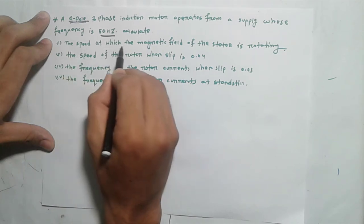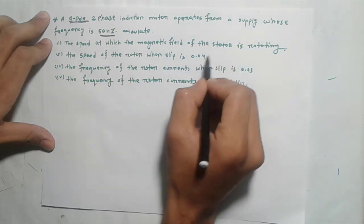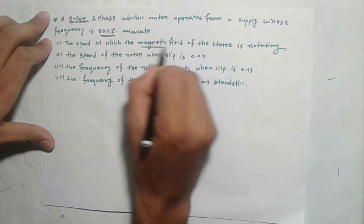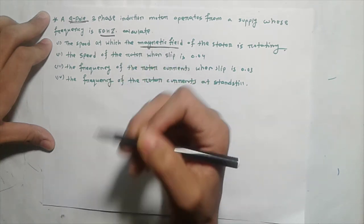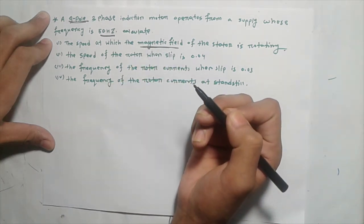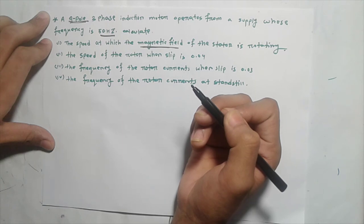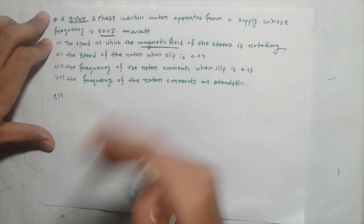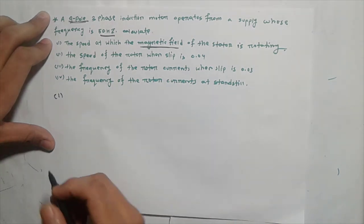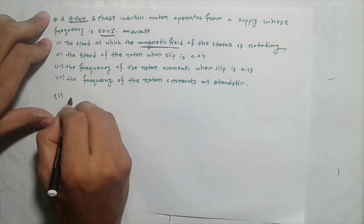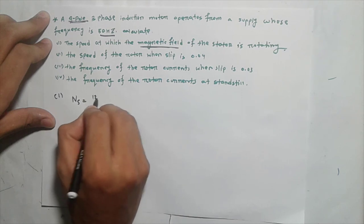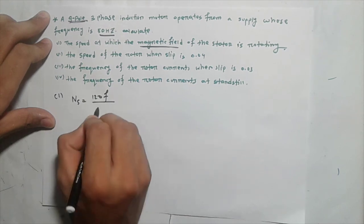The first part asks for the speed at which the magnetic field of the stator is rotating. The magnetic field of the stator rotating means we need to find the synchronous speed. The synchronous speed is calculated using the standard formula.